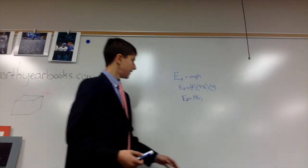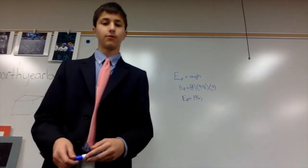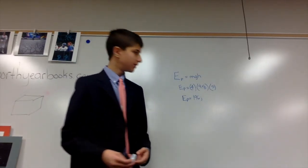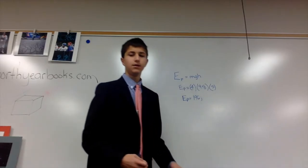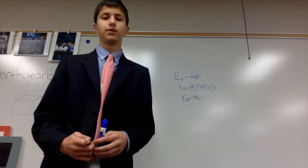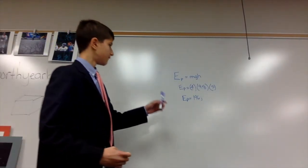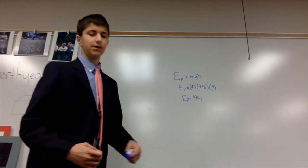So if the mass is 4 kilograms, and the force of gravity on Earth is 9.8 meters per second squared, and the height is 5 meters, the answer would be 196 joules. This is calculated by multiplying 4 times 9.8 times 5.